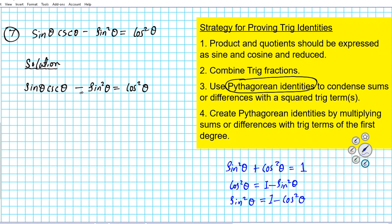Now we have minus sine squared theta on the left side — which of the three forms of the identity sine squared theta plus cosine squared theta contains minus sine squared theta? Clearly it's the second one, because we have that minus sine squared theta right there. So the question is: can we convert this product of trig functions into one that results in cosine squared theta? If so, we are done.